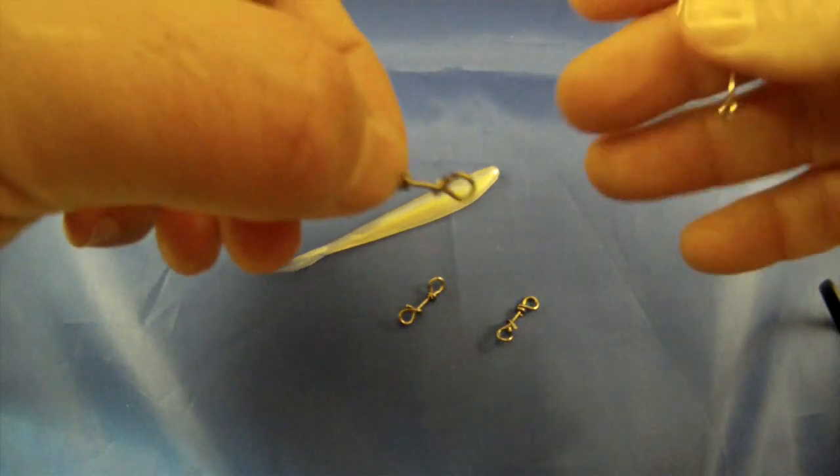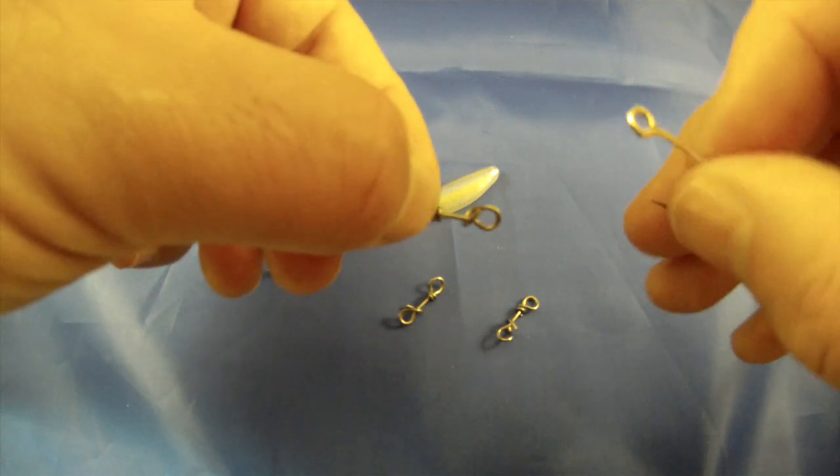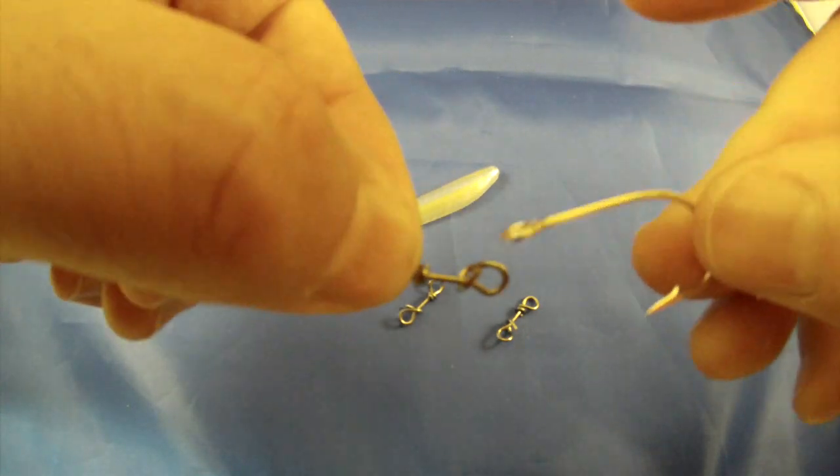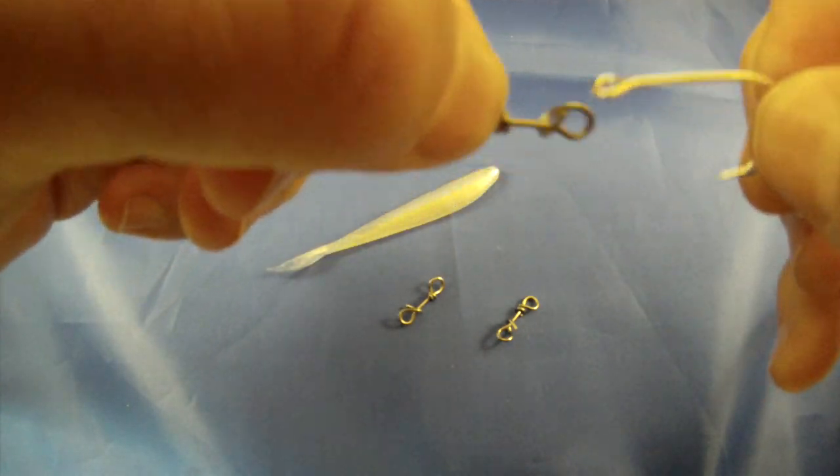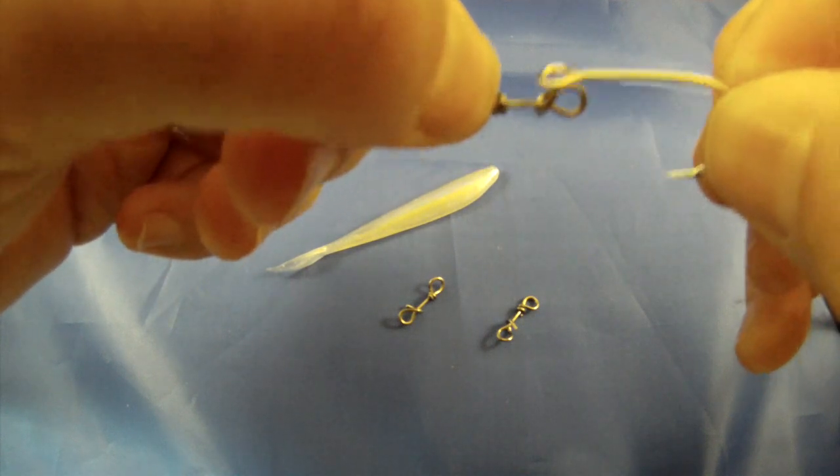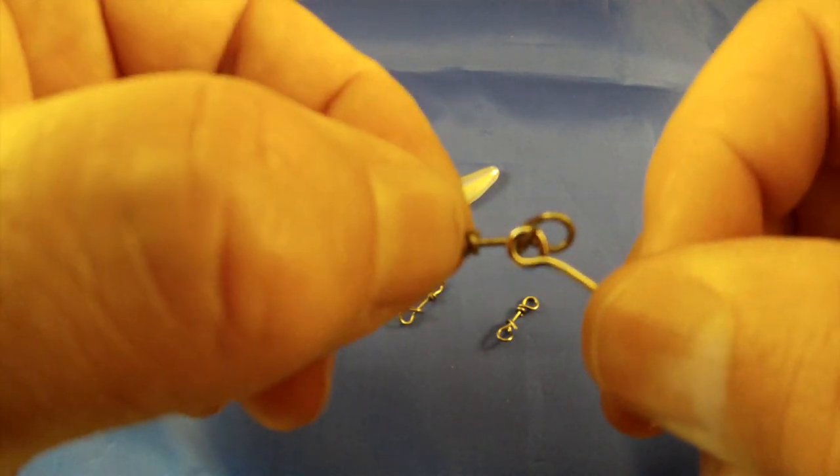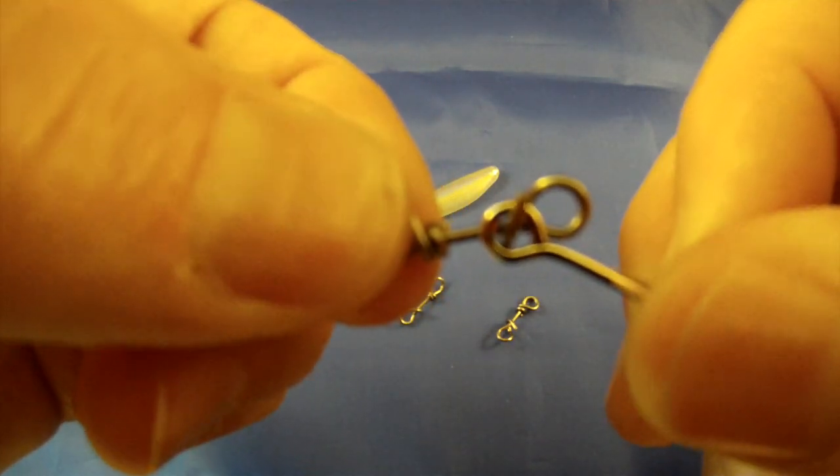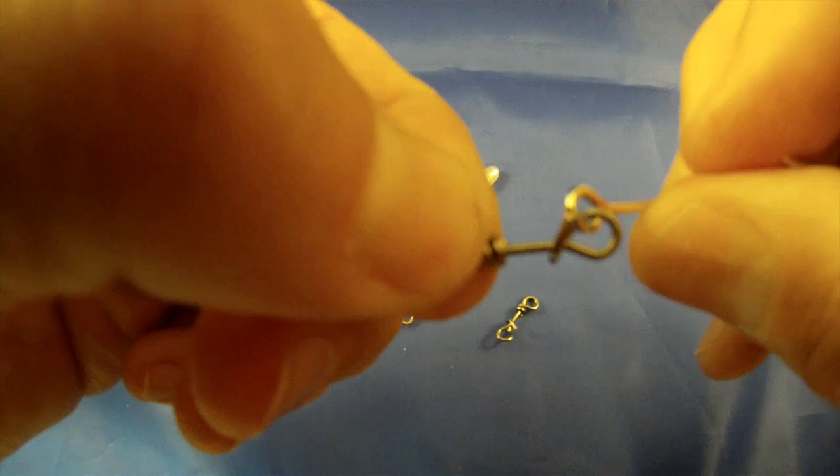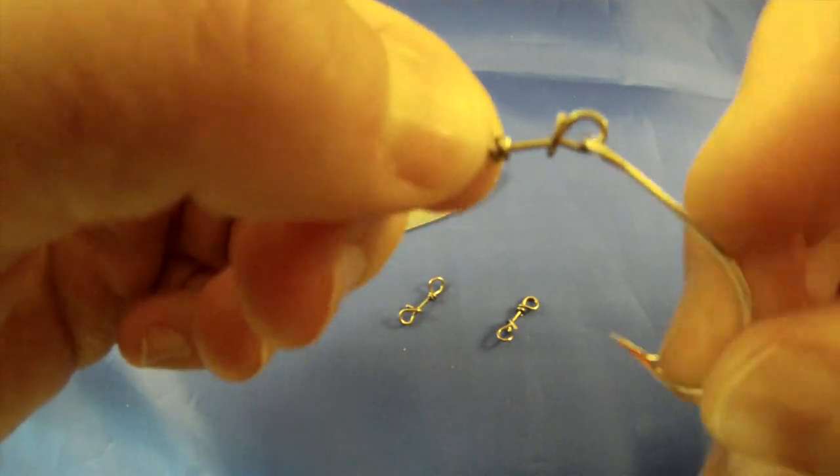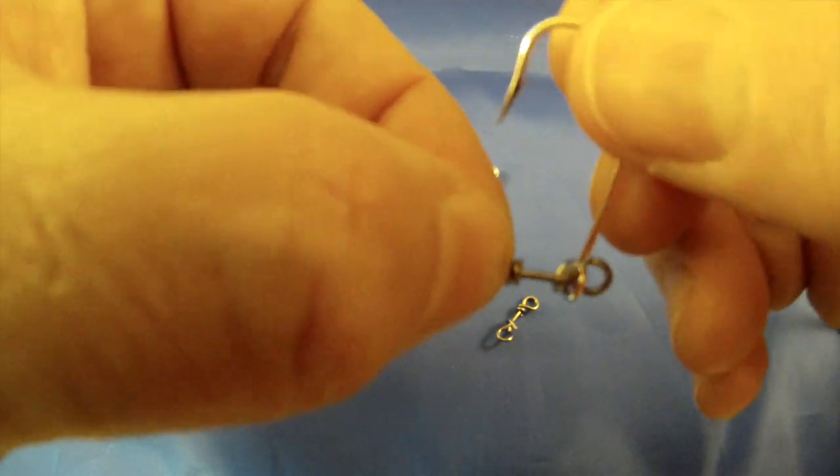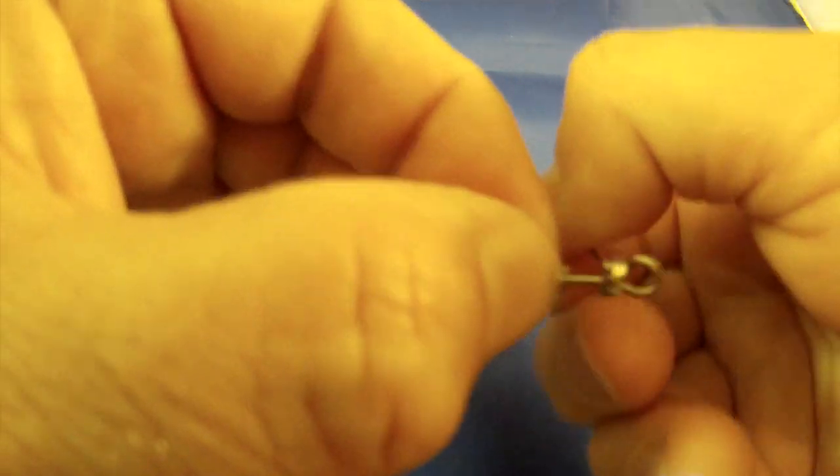So if you want your hook to ride point up, when you start rigging it, it's point down, and then you just slide it over the hole and you'll kind of hear it snap. And it'll loop back up, and it's just simply a turn.